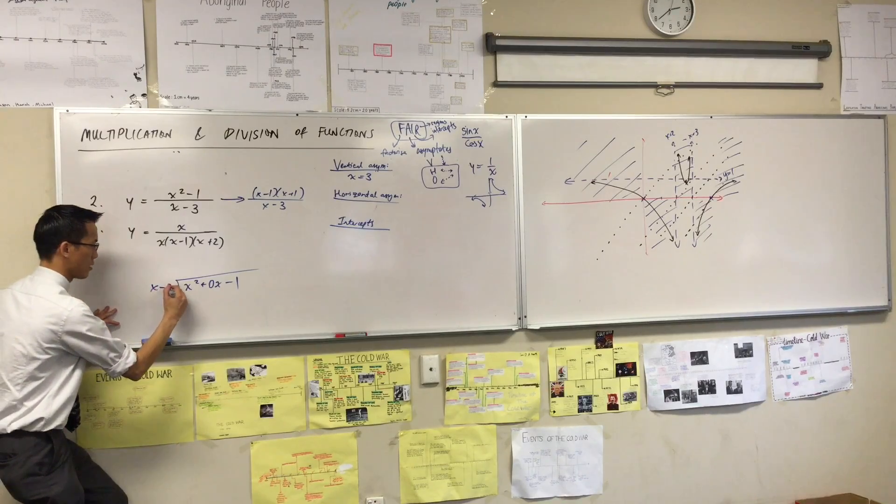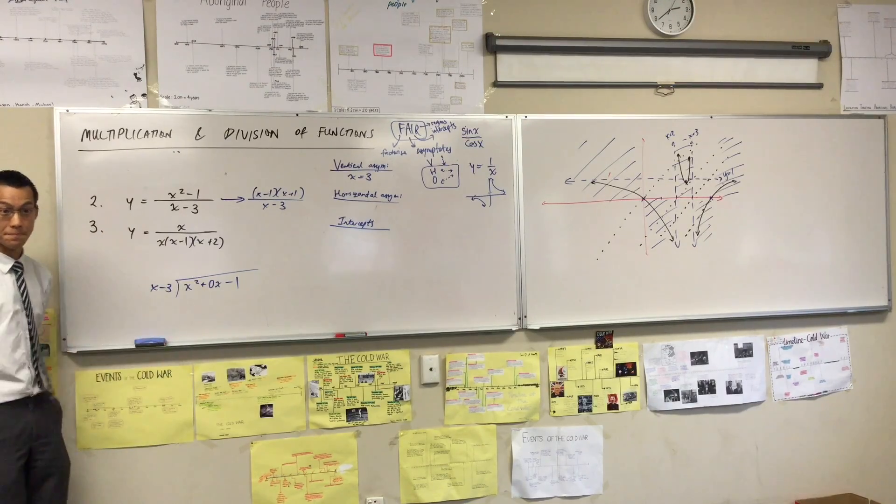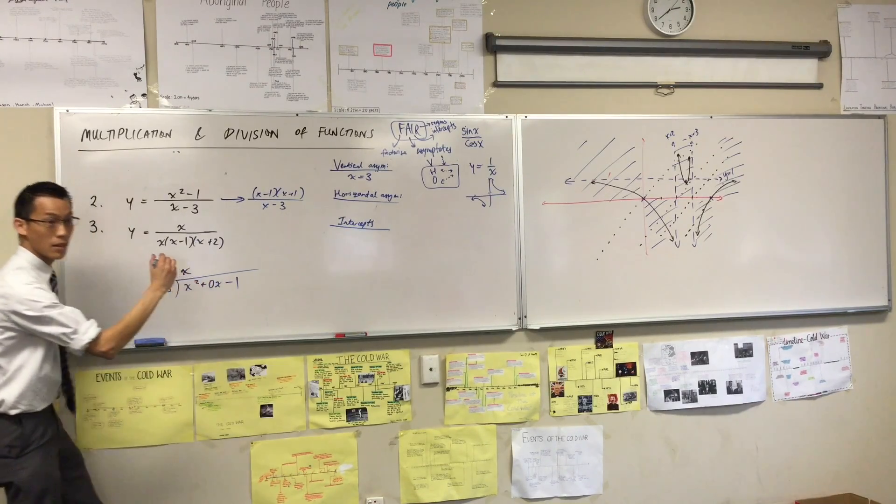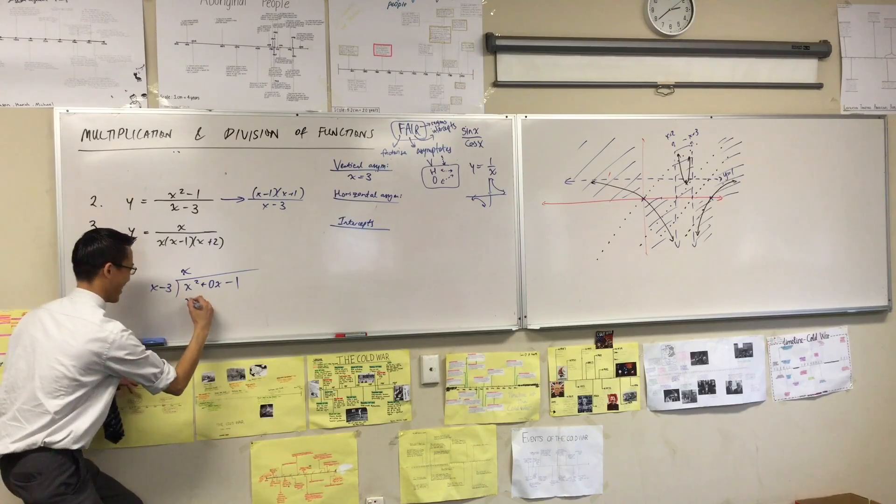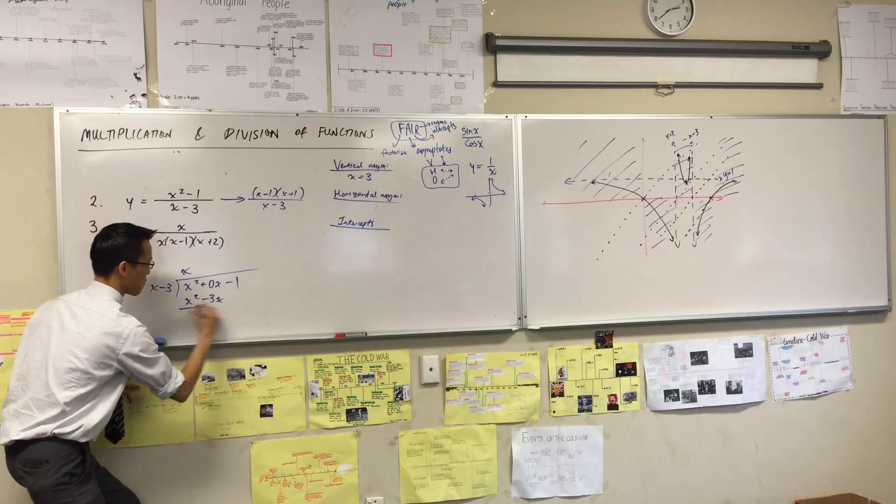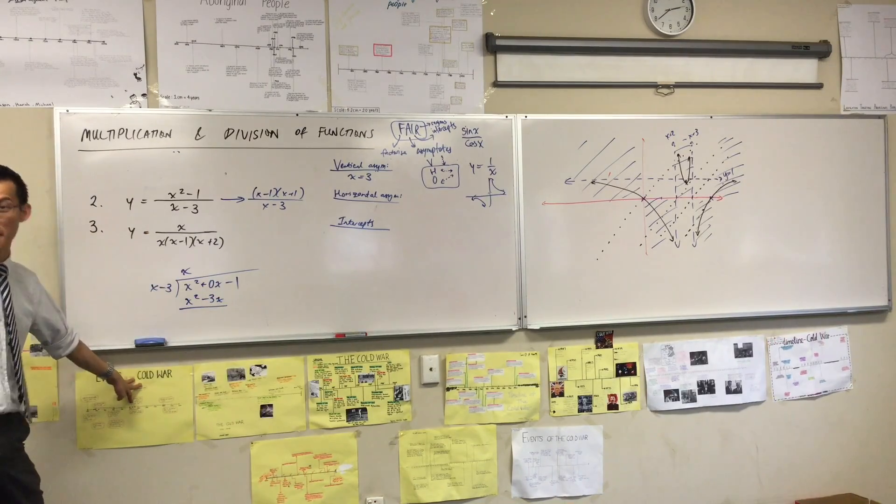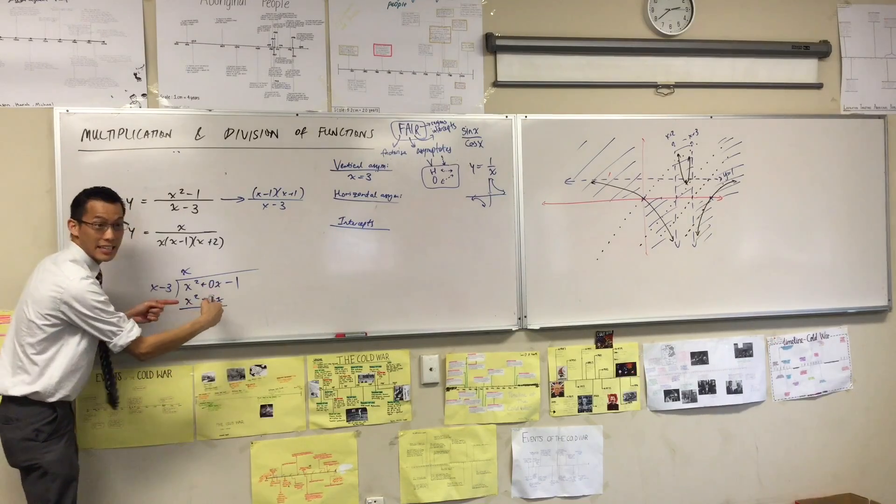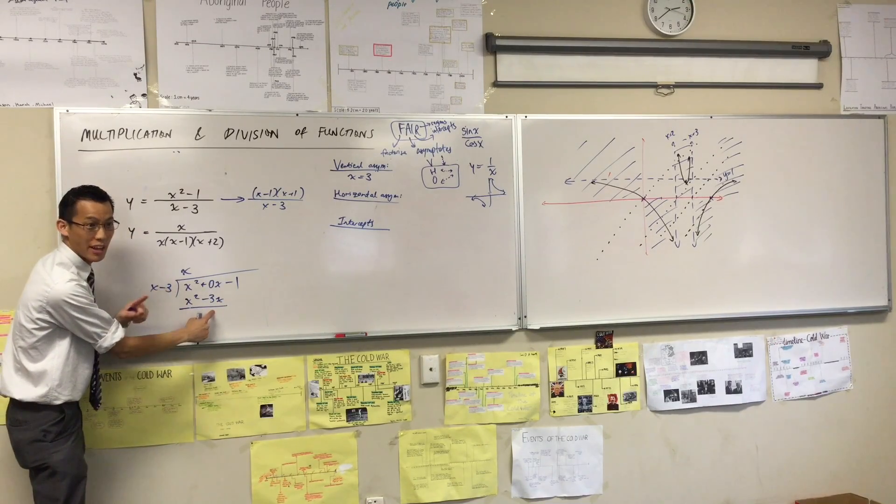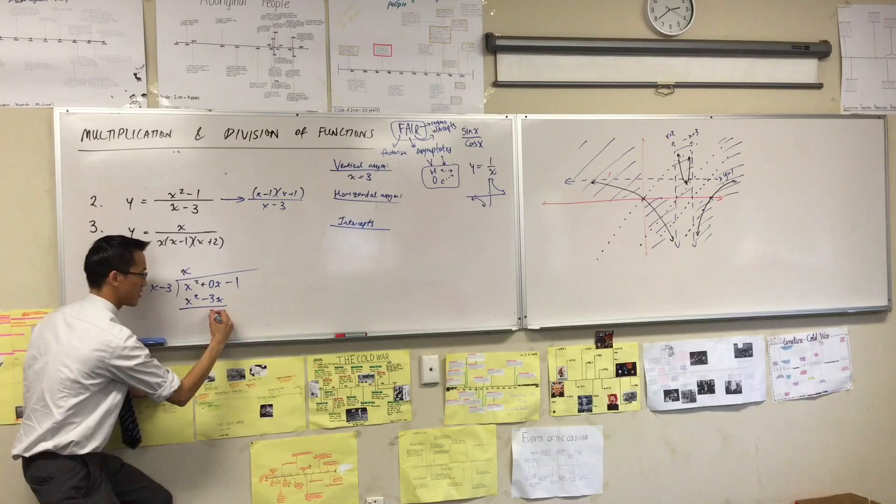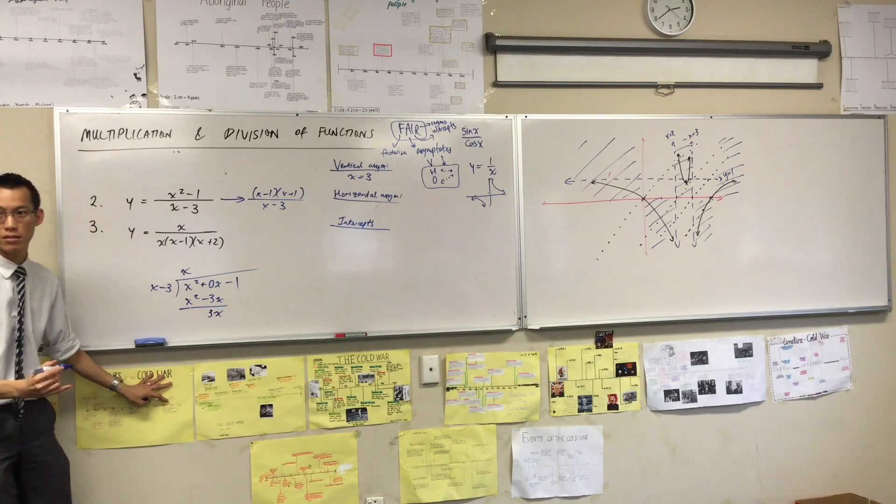Good, start me off. Now remember at this point just like in numerical long division I'm subtracting, so these guys cancel and this leaves me with 3x.